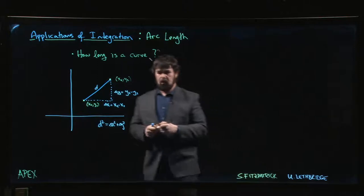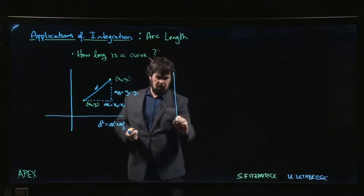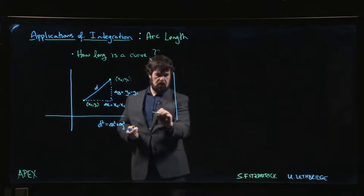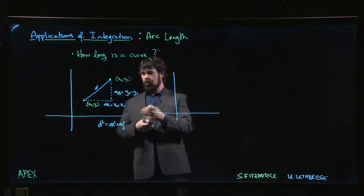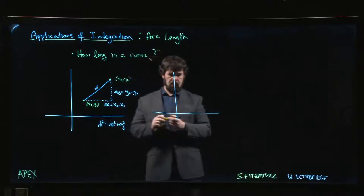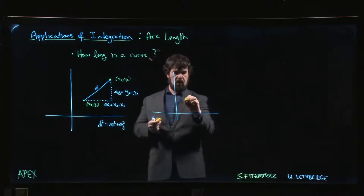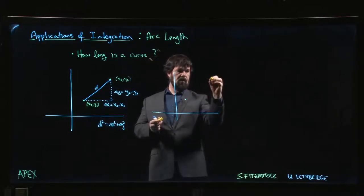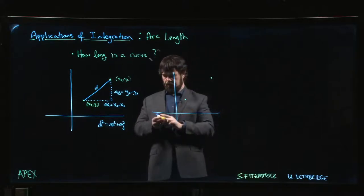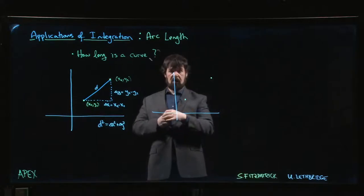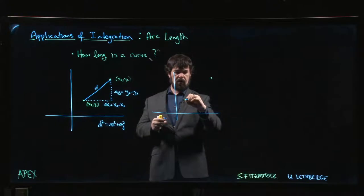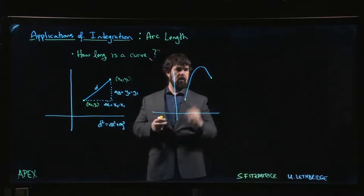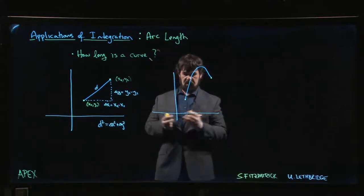Another question is: what if you're going between two points but not in a straight line? What if instead of following a straight line you follow some curve, traveling like this — how do we measure the distance then?